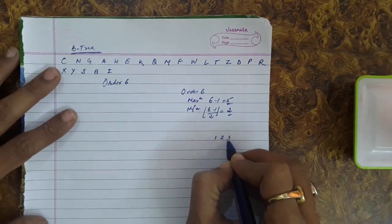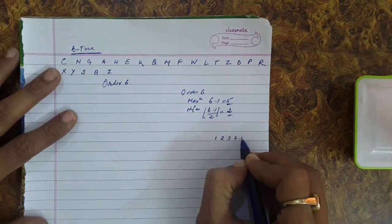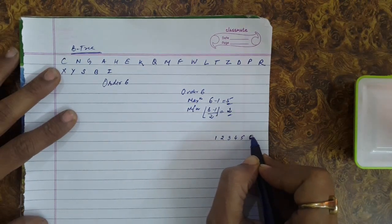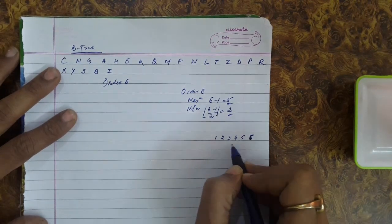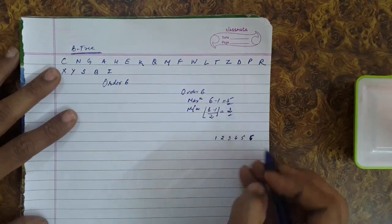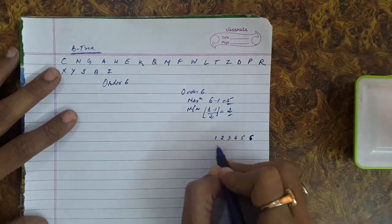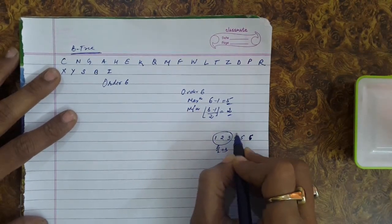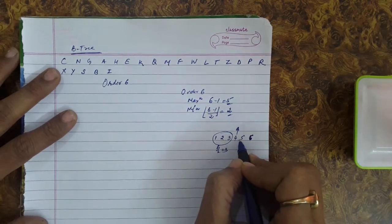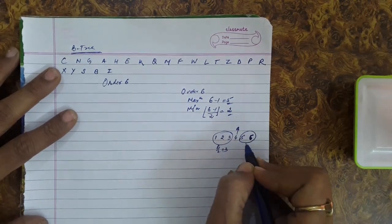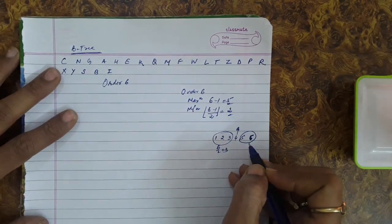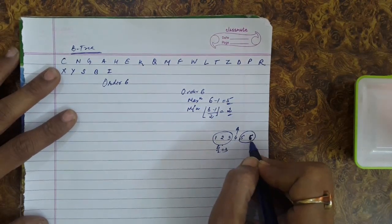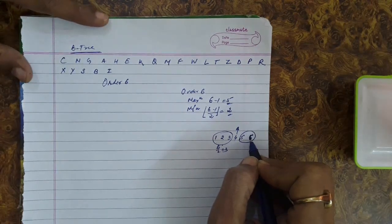Up to 5 keys there should be no problem, but when inserting the sixth key, splitting will occur. We retain m/2 keys on the left side — that is 6/2 = 3 keys on the left side. The median key is sent upwards, and the remaining keys form another new node with 2 keys only.